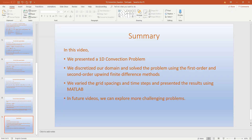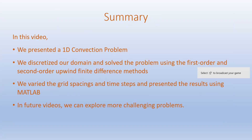In summary, in this video we presented a 1D convection problem, discretized our domain, and solved the problem using first-order and second-order upwind finite difference methods. We varied grid spacings, time steps, and Courant numbers, and presented the results using MATLAB. In future videos, we can explore more challenging problems. If you have any questions, please post them.